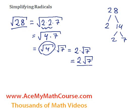So 2 root 7 is the mixed radical form of the square root of 28. In other words, it's just the square root of 28 fully simplified.